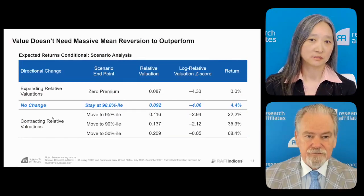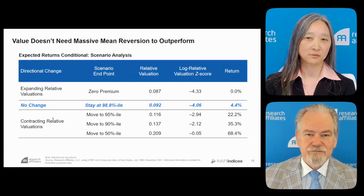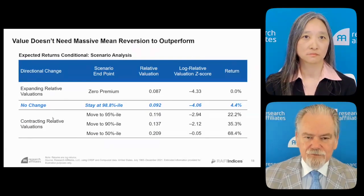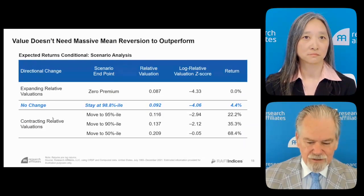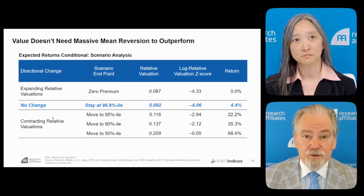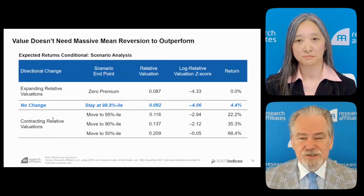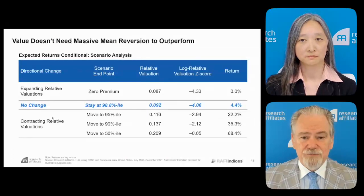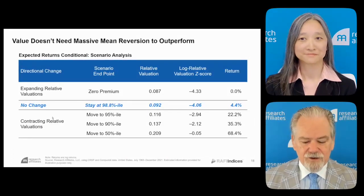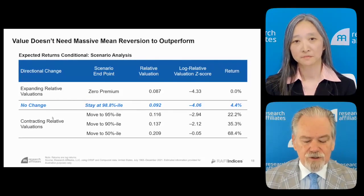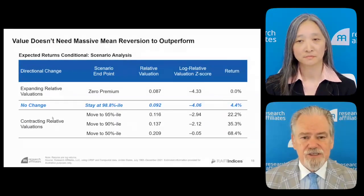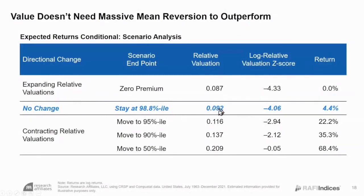Given how cheap value is right now, would you say tilting to value is almost like a free option for investors? I think 'free option' is a little simplistic. Do I think it'll work? Absolutely. But it'll work because it's massively uncomfortable — value stocks are really cheap because they're really out of favor. I would say very high odds of success. If we stay at the 98th percentile, you should expect the normal excess return of value relative to growth of about 4%. If you go back to median, you've got 7,000 basis points of excess return relative to growth.